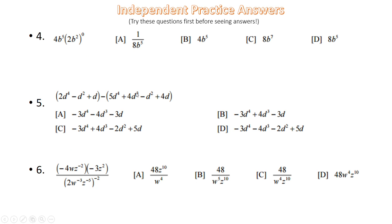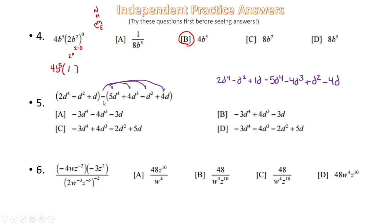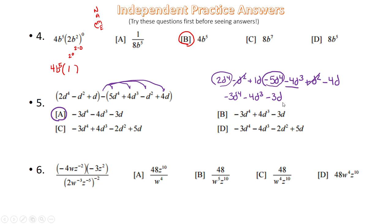Answer 4: apply the exponent-to-exponent rule first — 2 times 0 is 0, and anything to the 0 power is 1 — so that term becomes 1, and 4b to the 5th times 1 is still 4b to the 5th. Answer 5: distribute the sign, getting minus 5d minus 4d cubed plus d squared minus 4d. Combining like terms: negative 3d to the 4th, minus 4d cubed, the d squares cancel, and we're left with minus 3d.